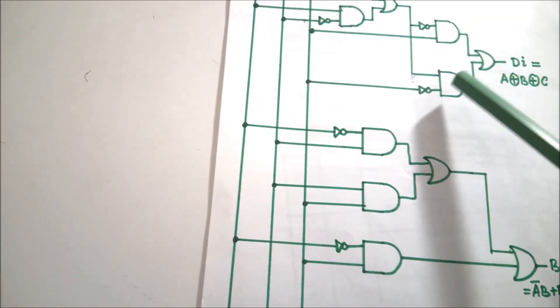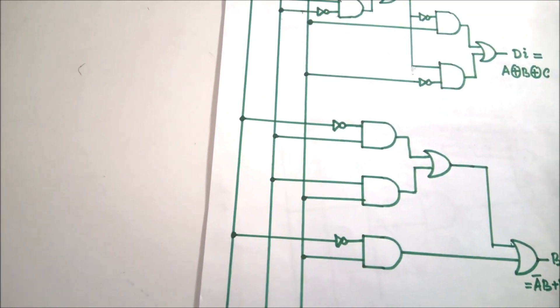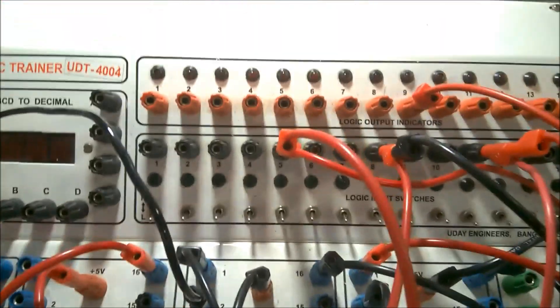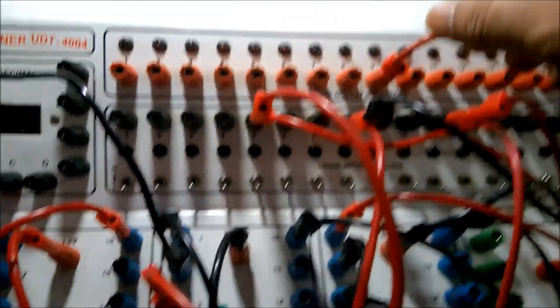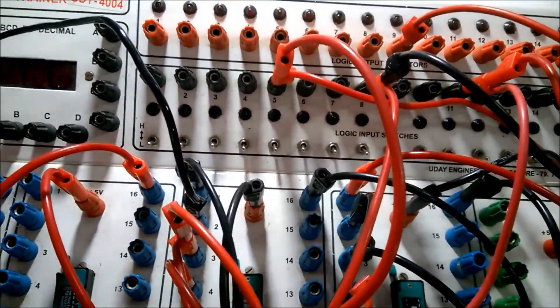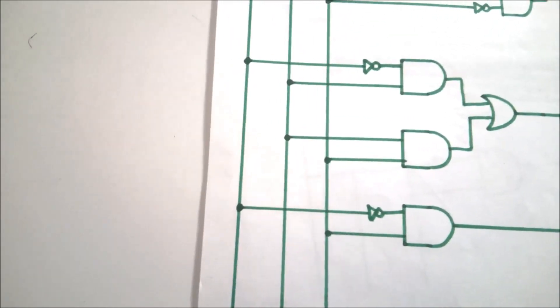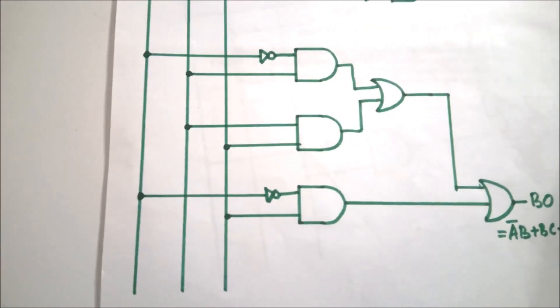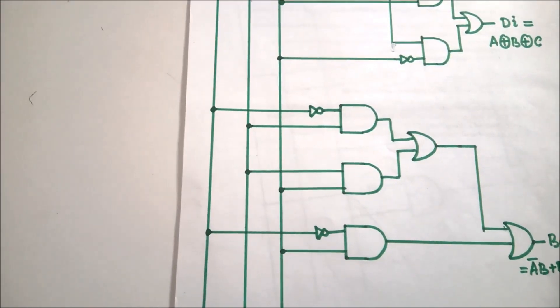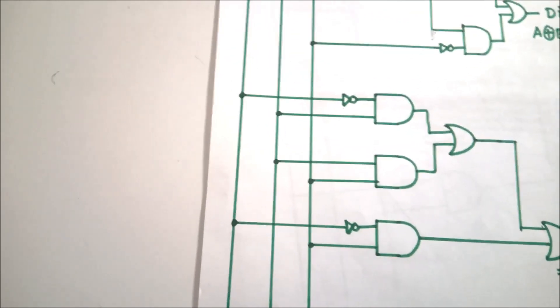The last gate connection is completed and the Difference output has been created. Now we have to proceed for the Borrow. The connections for Borrow are very similar. We will use the three variables A, B, C along with NOT gates. The important thing is that the first IC for AND gates is already fully used.